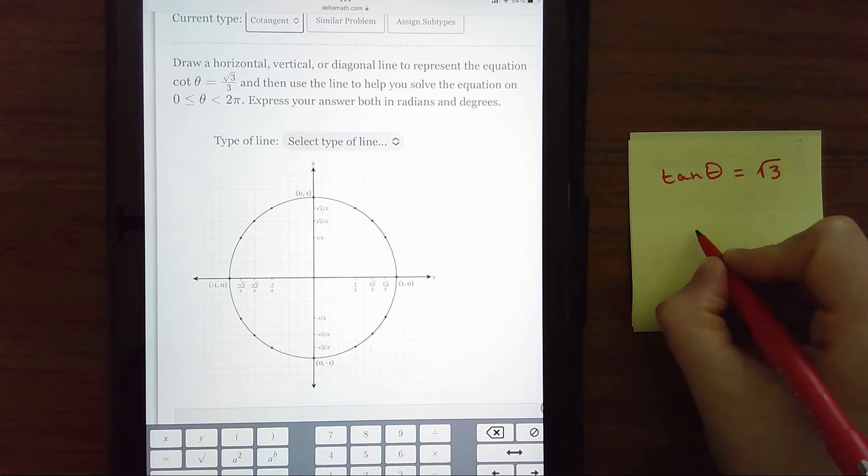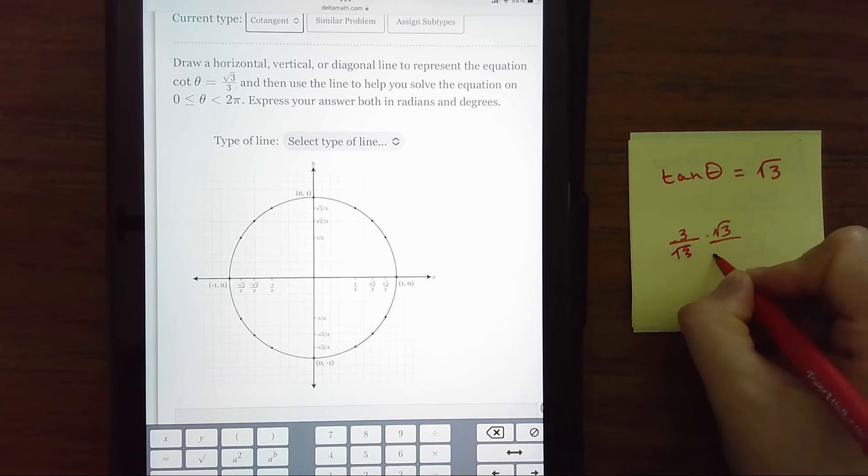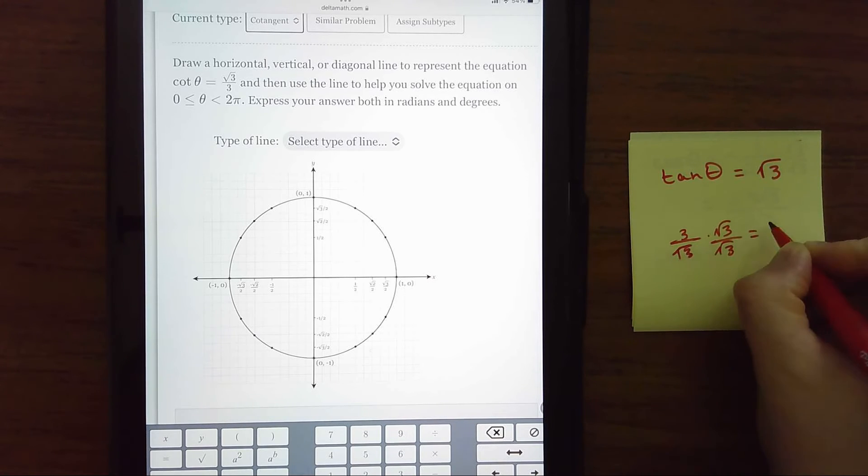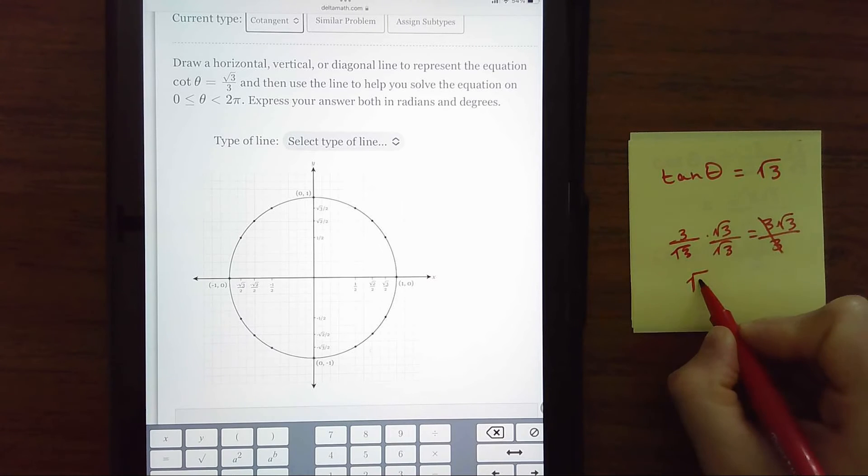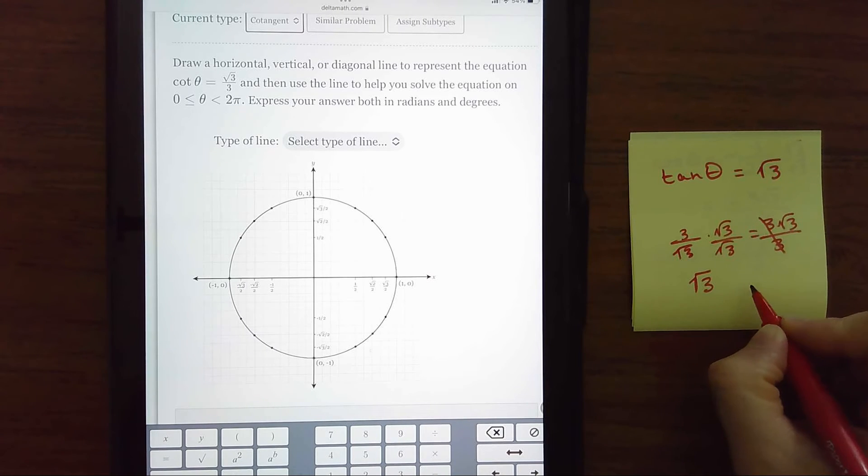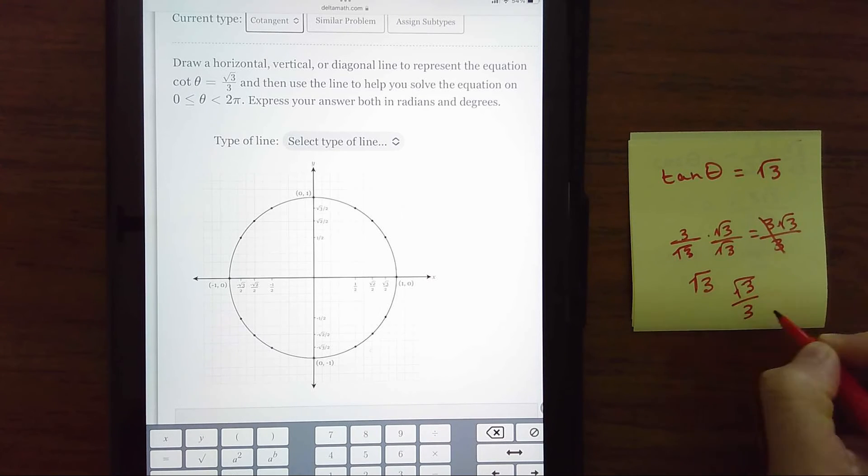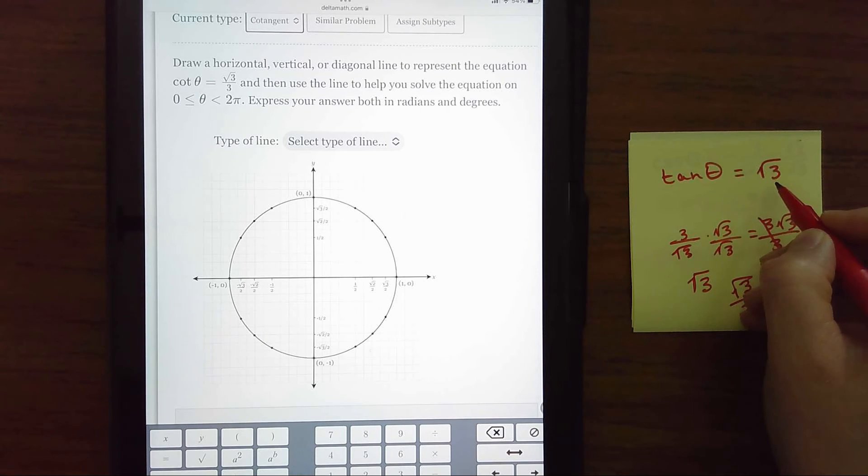If you want to do the work you can, you could flip it. You'd have to rationalize. You get three square roots of three over normal three and they cancel out. So as a reciprocal is this, these are reciprocals of each other. But anyway, so I'm trying to do tangent of square root of three.